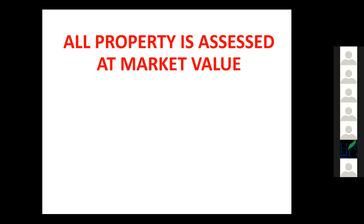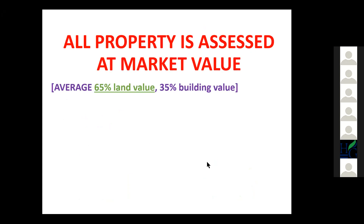By law, all property is assessed at market value. In Greenwich, Connecticut, 65% of all property value is land value and 35% is building value. These figures are true for well-to-do coastal communities in the United States — San Francisco is even higher at 80% land value and 20% building value. In Southern California, it's pretty much 65% land value and 35% building value.